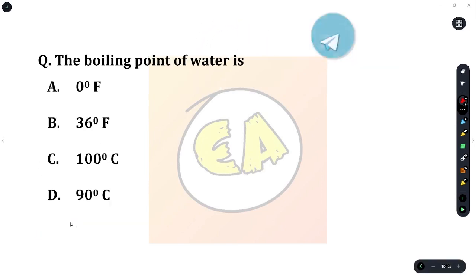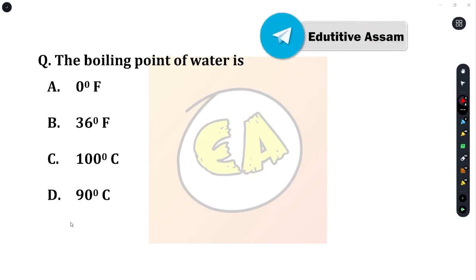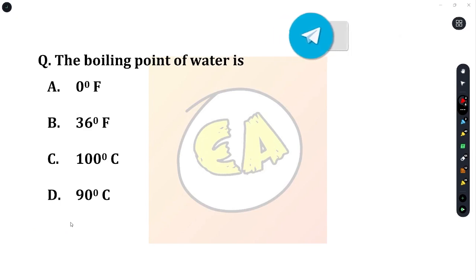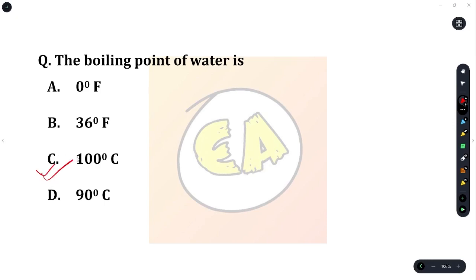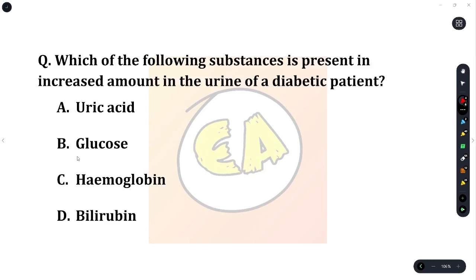Next question: the boiling point of water is? Option A: 0 degree Fahrenheit. Option B: 36 degree Fahrenheit. Option C: 100 degree Celsius. Option D: 90 degree Celsius. The correct answer is Option C — 100 degree Celsius.